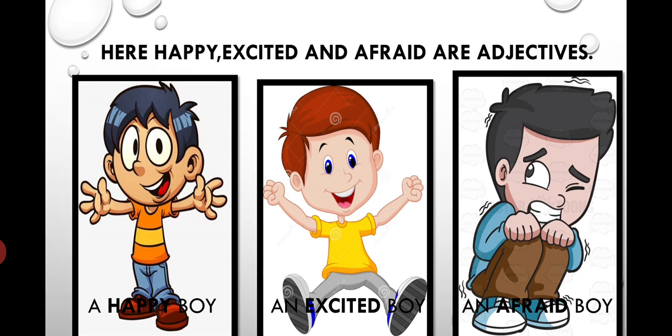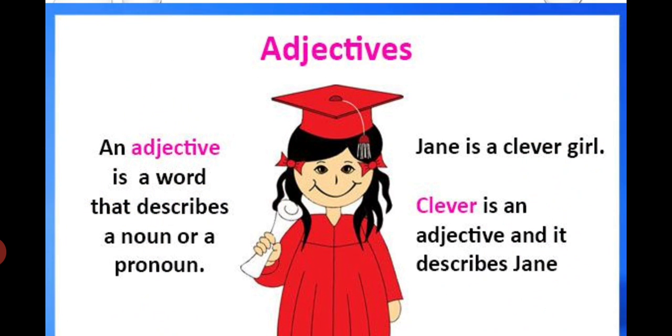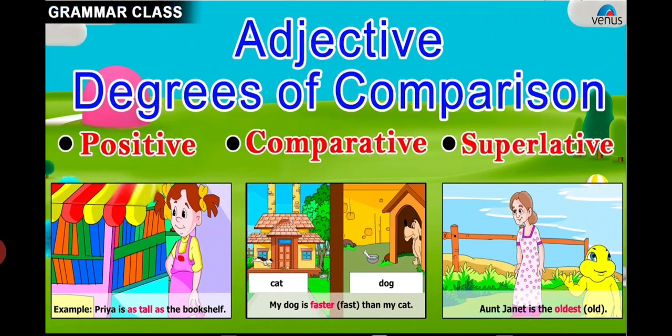In our previous video we learned about adjectives. Again I am giving you some examples of adjectives like a happy boy, an excited boy, an afraid boy. Here happy, excited and afraid are adjectives. Again I am giving you the definition of adjective: an adjective is a word that describes a noun or a pronoun. In the previous video we had also studied what are adjectives, those words which describe nouns and pronouns.